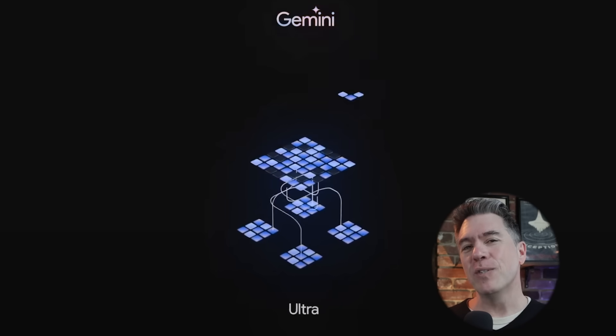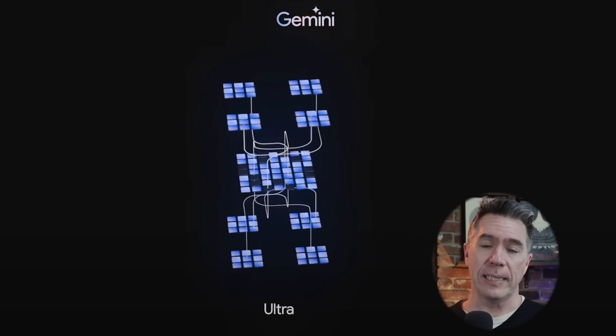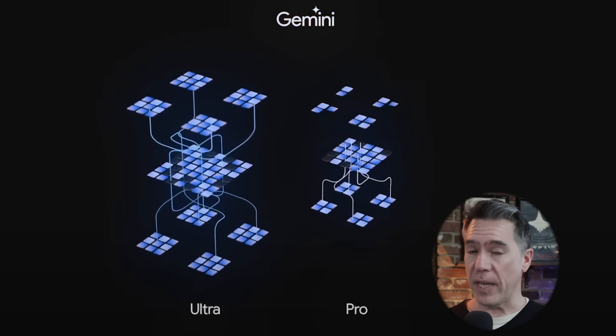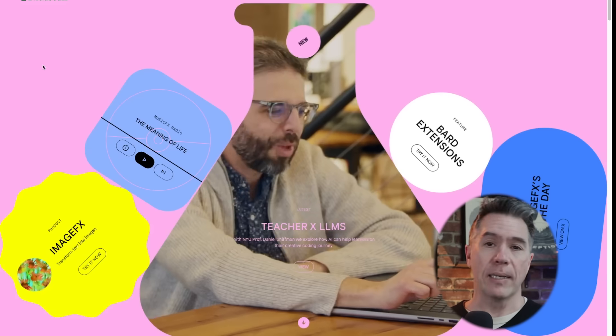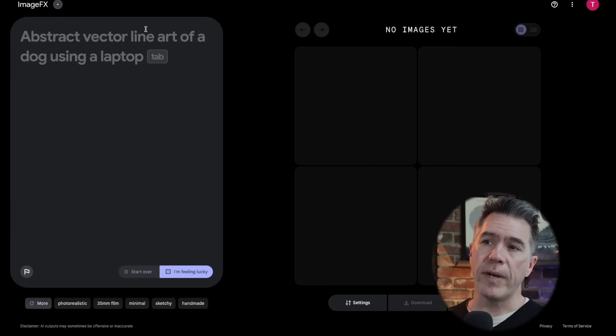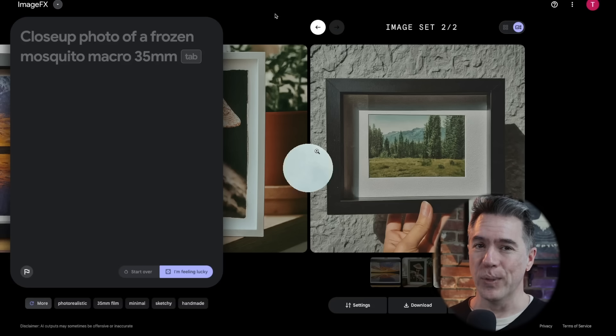Rolling over to the Google side of things, Google has released some tools we can actually play with. The big news is that Gemini Ultra will be released later this week — I'll have a full breakdown once that comes out. In the meantime, if you want to play around with their new image generation model or a really cool music generation model, you can do so at labs.google. The image generator is Image Effects.